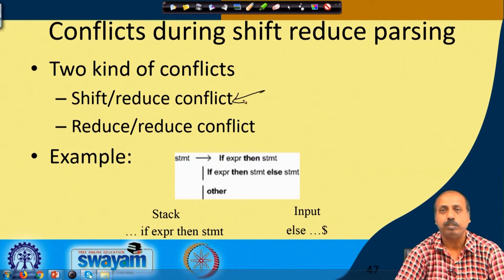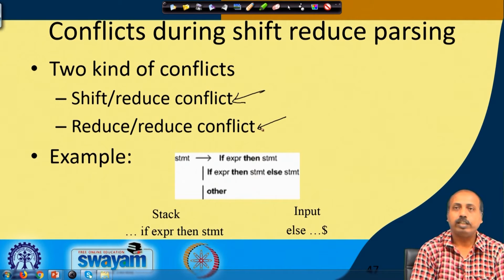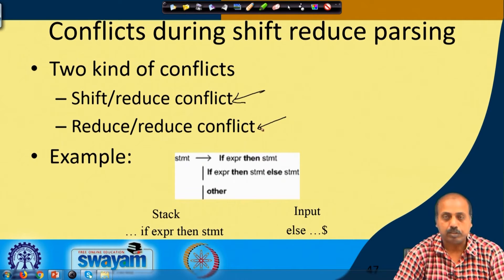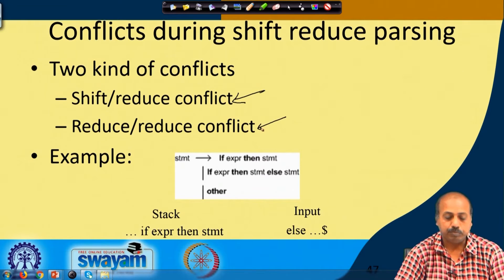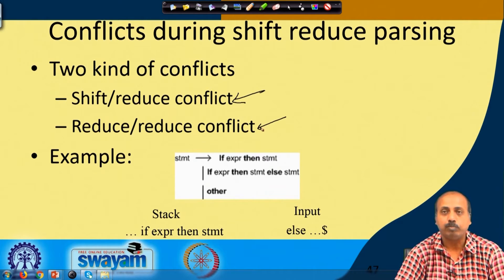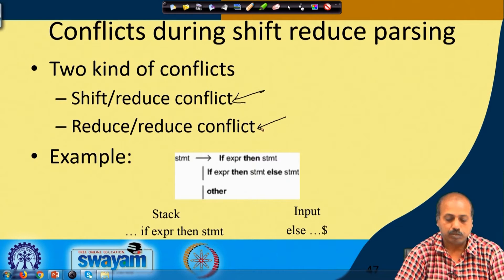There is another conflict known as reduce-reduce conflict, where there are more than one rule by which we may do the reduction. In future, as you see more tokens, maybe one of these reductions is valid. So if you do not do enough look-ahead, there will be conflicts that cannot be resolved at the first level itself — that type of situation gives us a reduce-reduce conflict.